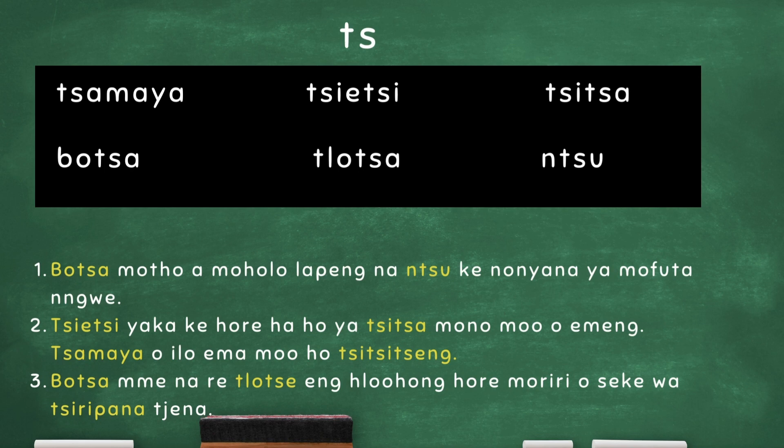When the side of the side, the middle is gone. Tita Tita Bota Ota. Dipolelota honeta meslala ya peleke Bota moto amogolo La bengna nchun Kino nyana ya mufuta ngwe Tieti yaka Gehore Hahoya. Tita mounu mounu emi. Tamaya uilo ema mounu Hotititi.